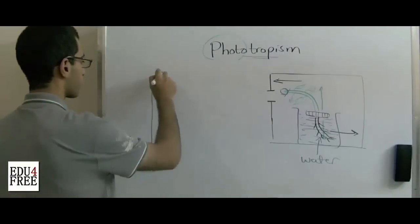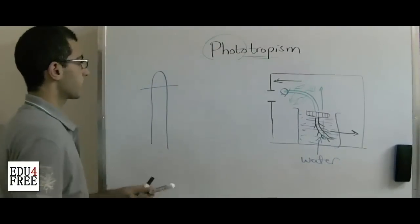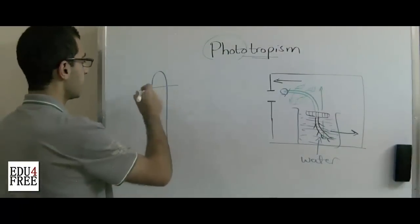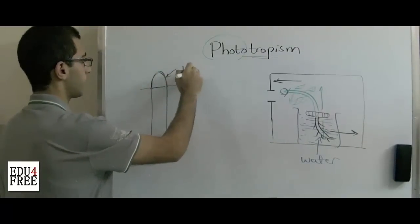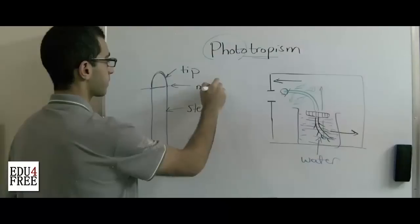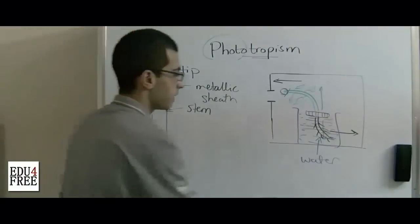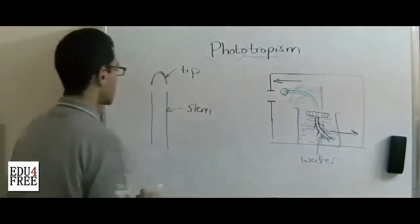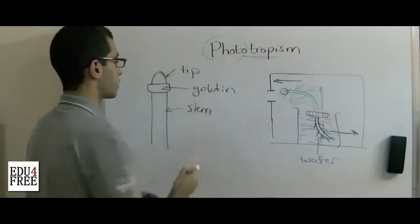So this is the coleoptile. He cut this part so that no curvature took place. Then he replaced it again and he separated between the tip and the stem by a metallic sheet. Also, no curvature took place. But when he replaced the tip on this stem and fixed it using gelatine, the curvature occurred.